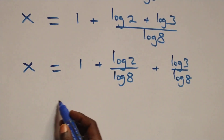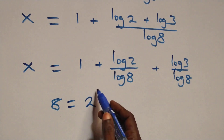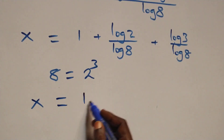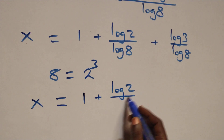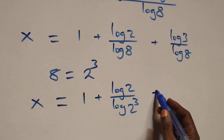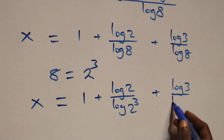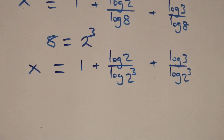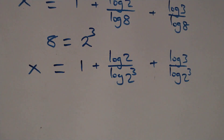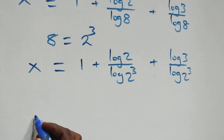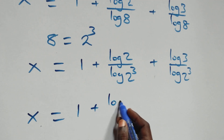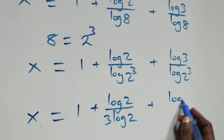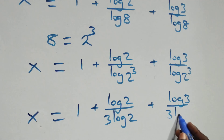We can express 8 as 2 cubed. So what we have becomes x equals to 1 plus log 2 over log 2 cubed plus log 3 over log 2 cubed. Applying the power rule of logarithms, the 3 comes down, giving x equals to 1 plus log 2 over 3·log 2 plus log 3 over 3·log 2.